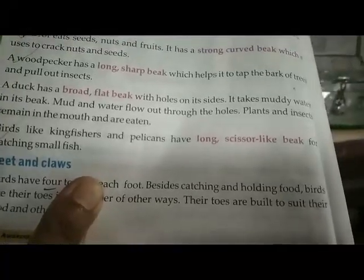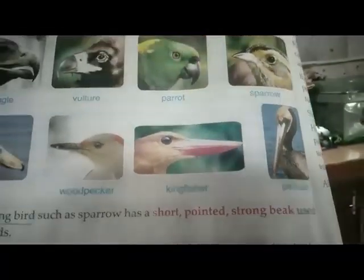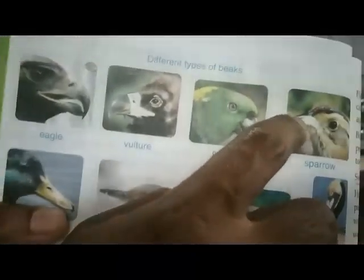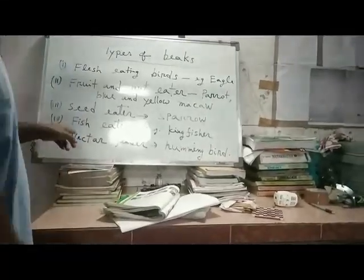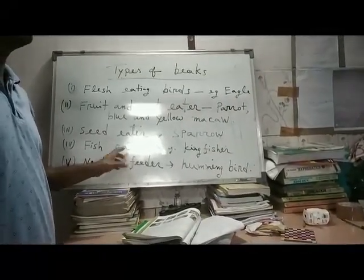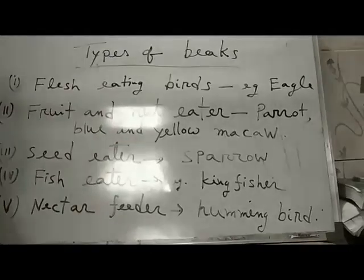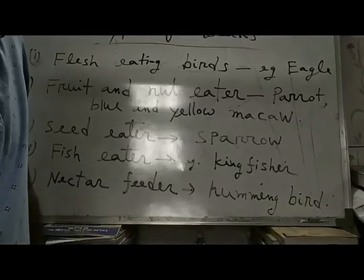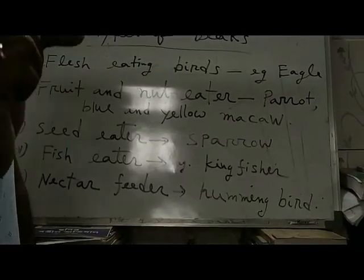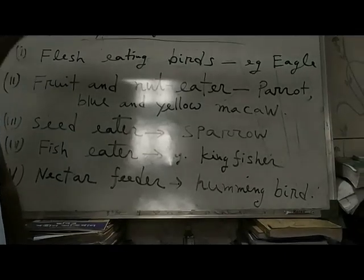Birds like the kingfisher eat fish, so they are fish-eating birds with a scissor-like beak — like the pelican, which also has a very long scissor-like beak. The woodpecker has a long beak, while the sparrow has a short, pointed beak. The hummingbird is a nectar feeder — it feeds on the liquid food of flowers. They are very colourful and have a long, pointed beak to collect nectar from flowers.